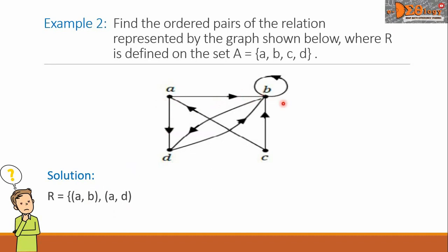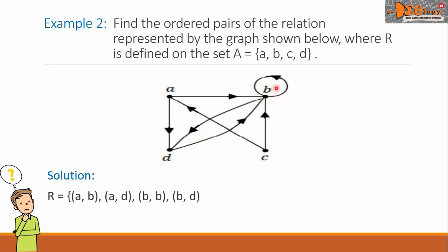Let's go now to point B. We identify all arrows that go out from B to another point. The first arrow to consider is the loop, represented by BB. Next is the arrow from point B going to point D, so we write the ordered pair BD. There are no more arrows going out from B.